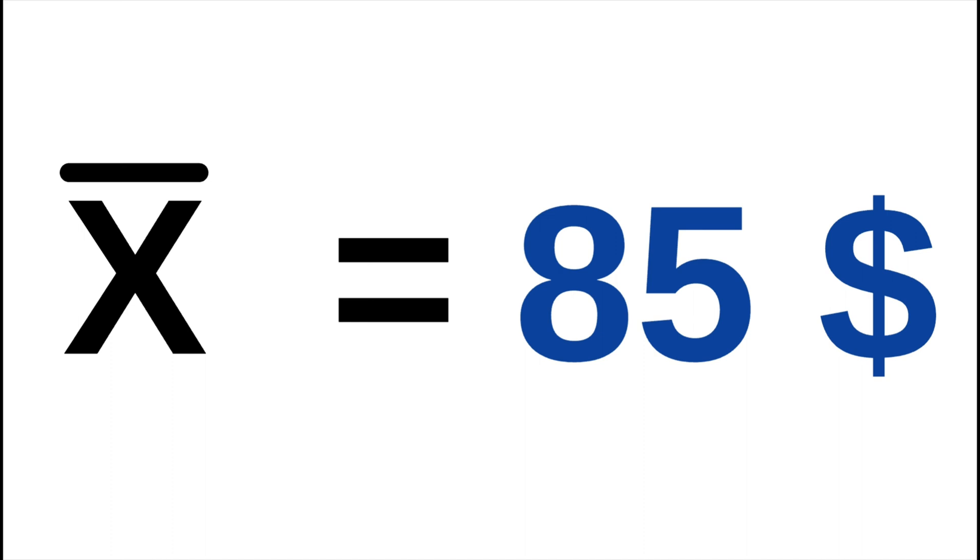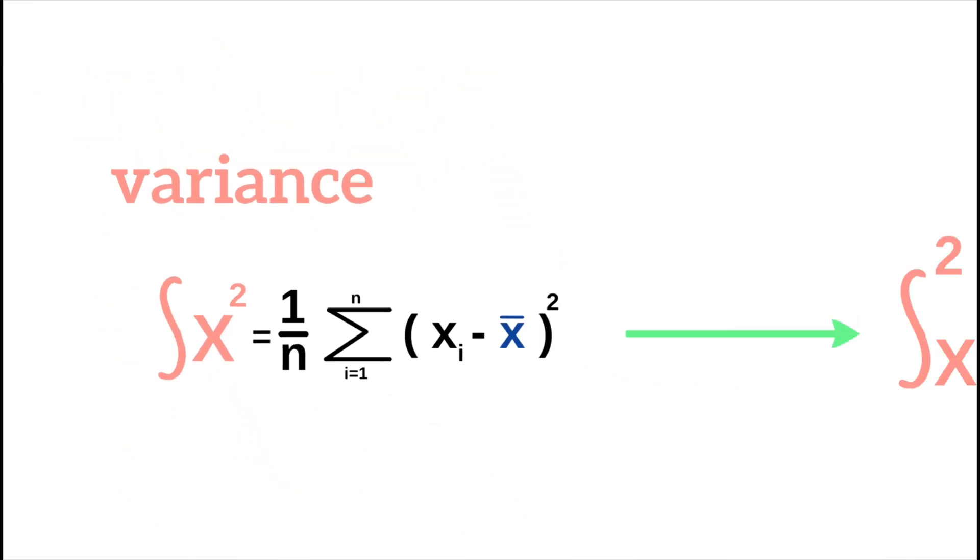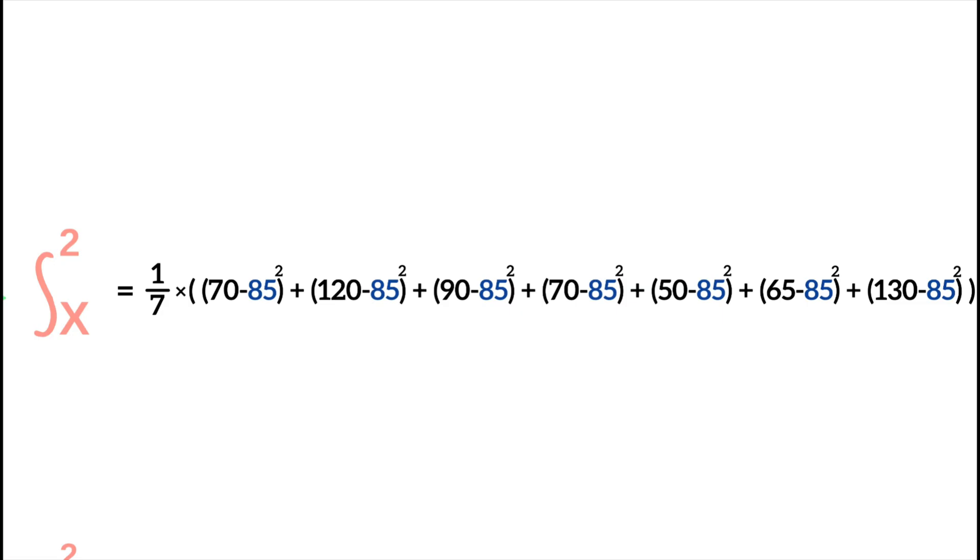Next, we will calculate the variance by substituting the values into the formula. For n, we use 7 because there are 7 smartphones in total. For x_i, we then use the various prices and subtract these from the mean of $85, squaring the result.